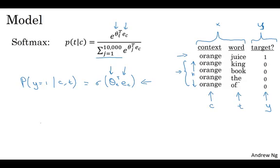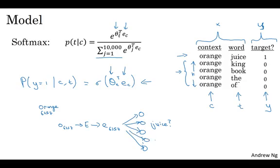And so to draw this as a neural network, if the input word is orange, which is word 6257, then what you do is you input the 1 hot vector, pass it through E, do that multiplication to get the embedding vector 6257. And then what you have is really 10,000 possible logistic regression classification problems. Where one of these will be the classifier corresponding to, well, is the target word juice or not? And then there'll be other words. For example, there might be one somewhere down here, which is predicting is the word king or not? And so on, for these are possible words in your vocabulary.